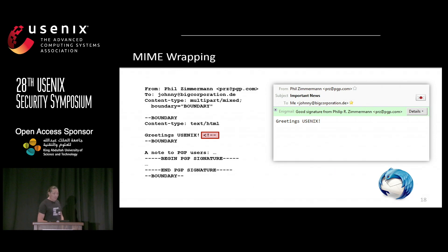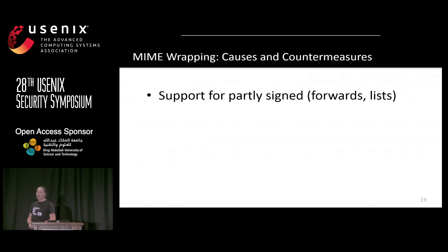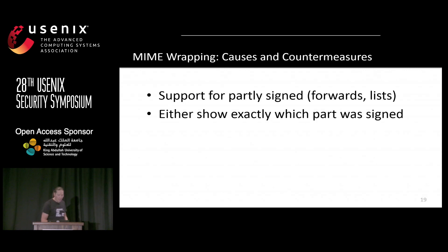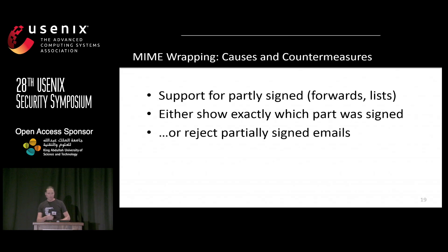The root cause is that many email clients show a valid signature indicator even though only part of the email was actually signed. This likely happened because forwarded emails and mailing lists that add footers often invalidated signatures, so clients became more and more relaxed. As a countermeasure, explicitly show which part is signed versus not — though this is very hard to implement securely and should not be done in the email body. An all-or-nothing approach is recommended: don't show an email as validly signed unless the entire MIME structure is signed.